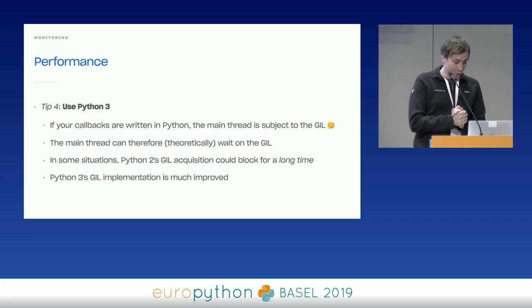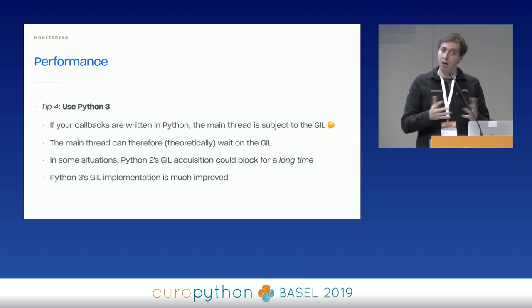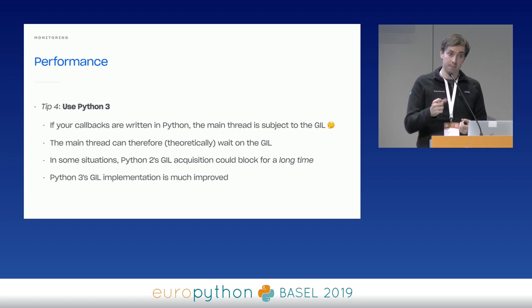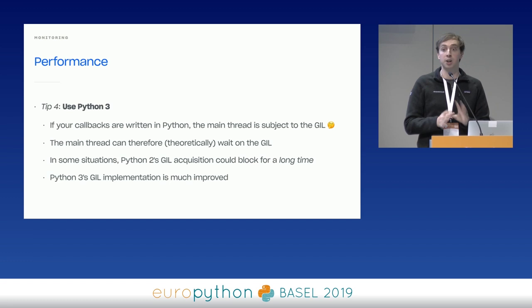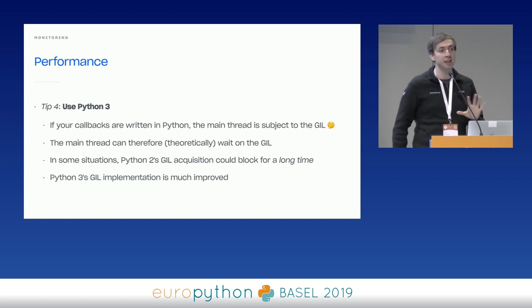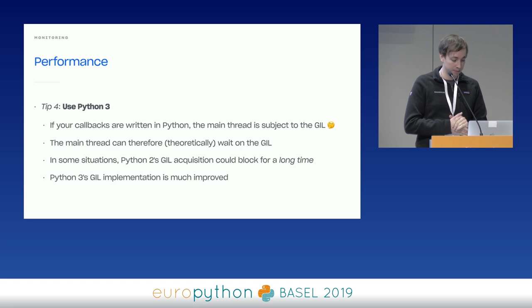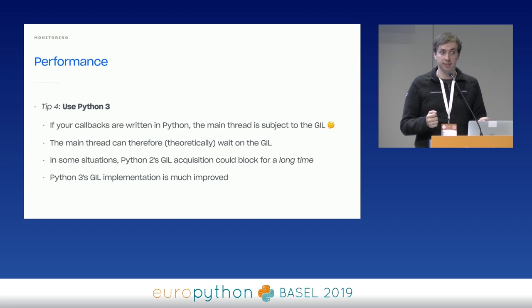Tip four: use Python 3. The main thread is callback-driven and written in Python, so it's subject to the GIL lock. You might think: didn't we say we shouldn't block on the main thread, and grabbing a lock is one such thing? Well, yes — theoretically Python by its nature means the main thread might be blocked waiting to acquire the GIL itself. This is particularly bad in Python 2, because Python 3's GIL was rewritten and is much better. It usually starts showing up when you have a lot of threads. We fixed this with a fork of CPython: we patch Python's GIL to always prefer the main thread if it's ever waiting.